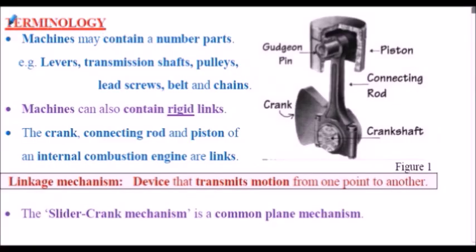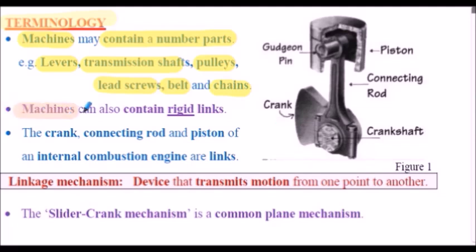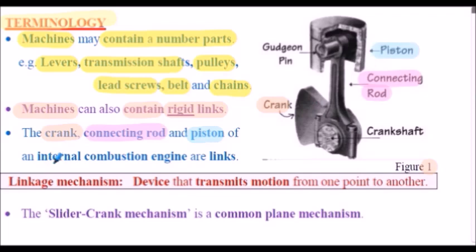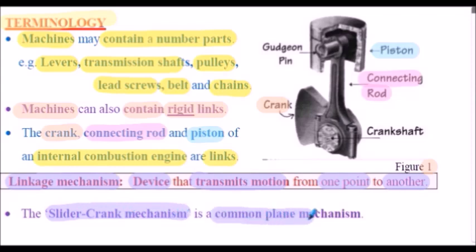Let's consider some terminology. Machines may contain a number of parts such as levers, transmission shafts, pulleys, lead screws, belts, and chains, but machines can also contain what are termed rigid links. The crank, the connecting rod, and the piston of the internal combustion engine shown in Figure 1 are all considered rigid links. A linkage mechanism is defined as a device that transmits motion from one point to another. A slider-crank mechanism is a common plane, two-dimensional mechanism.